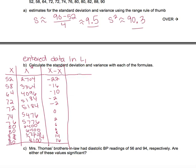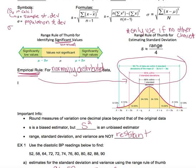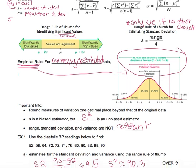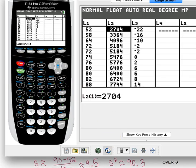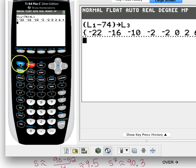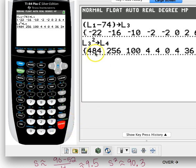Looking back at the formulas, I have x minus x̄ but I need that quantity squared. Since x minus x̄ is in list three, I can now take list three and square it, then store as list four. It gives me all of those squared values.